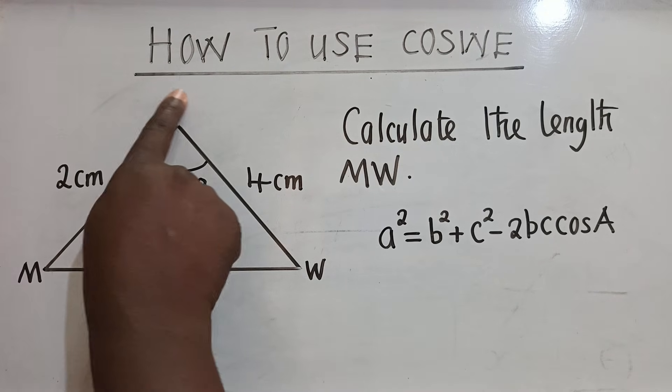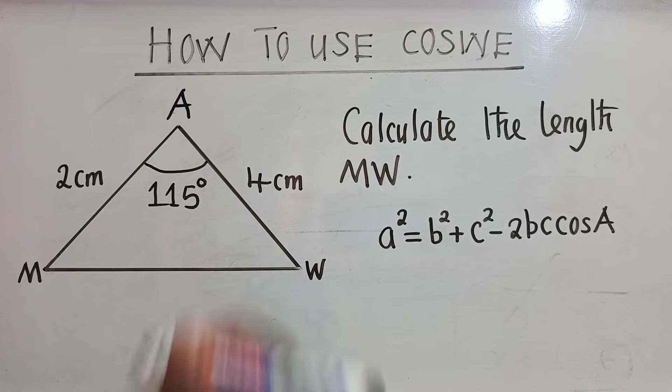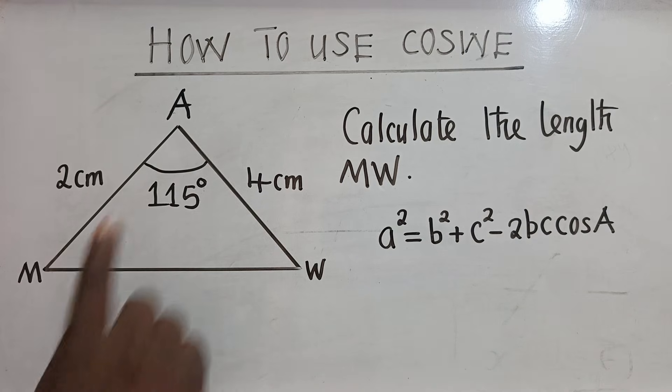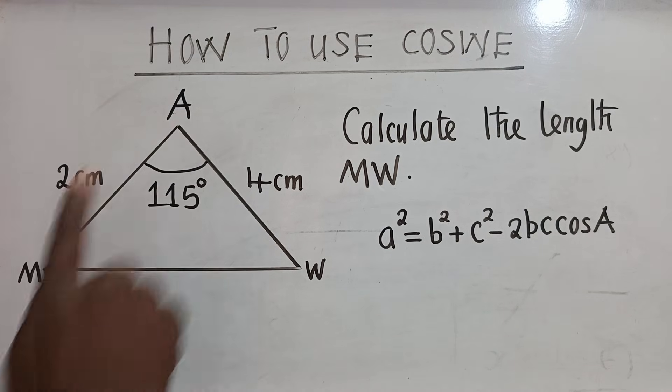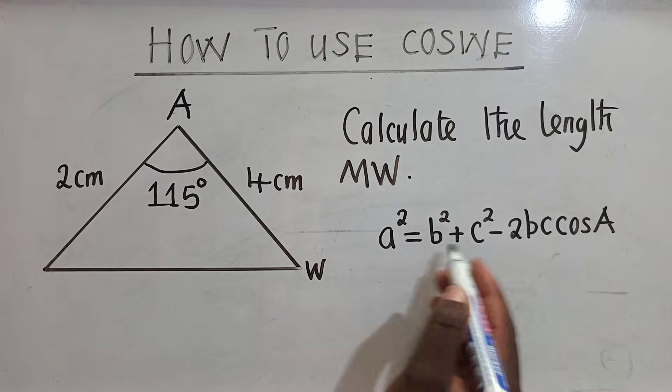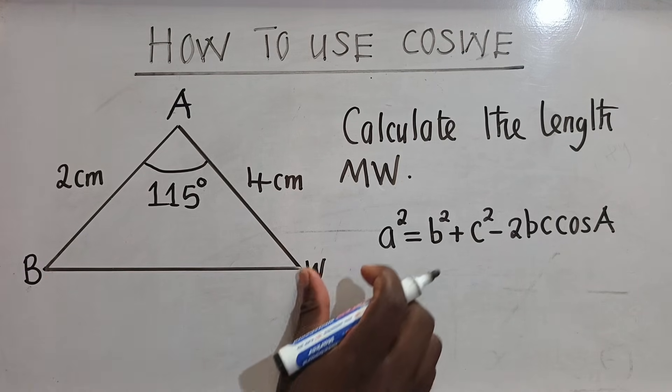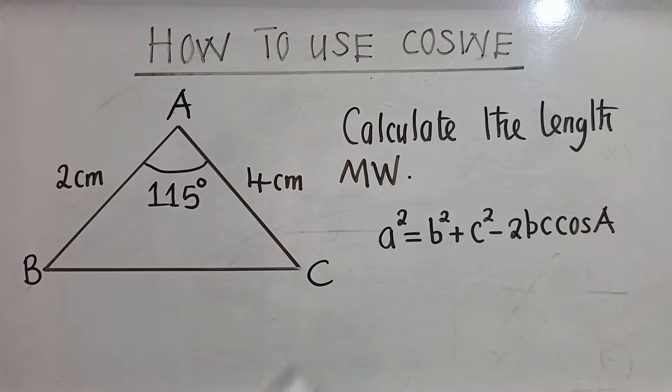Where there is P here, I'll put capital letter A. And mind you, capital letters represent angles, while small letters represent sides. Since I've put capital letter A here, I can put this side as my B or C. Because I want to use the letters which are in the formula. This would be my B. If this is my B, this would be my C.